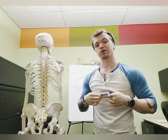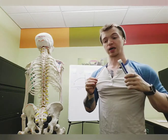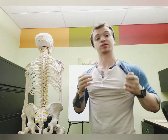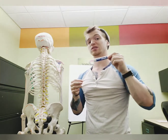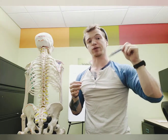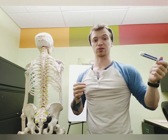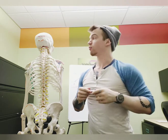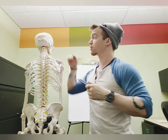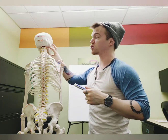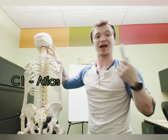The first thing that we need to understand about the levator scapulae is where it sits, because its location is going to tell us everything we need to know about what it is that the muscle does. So this guy is going to originate right at cervical spine number 1, or what we call the atlas.